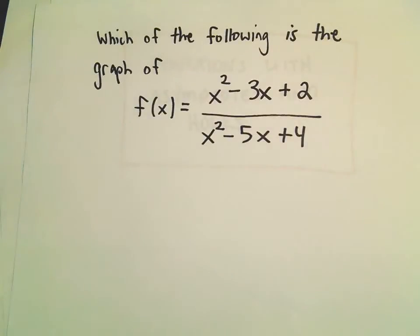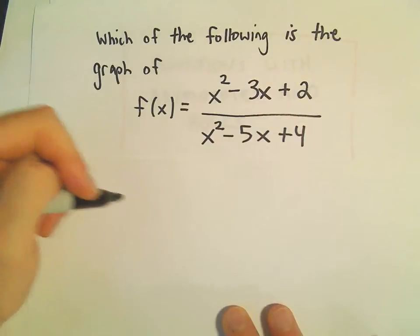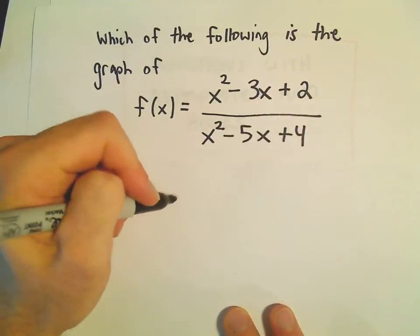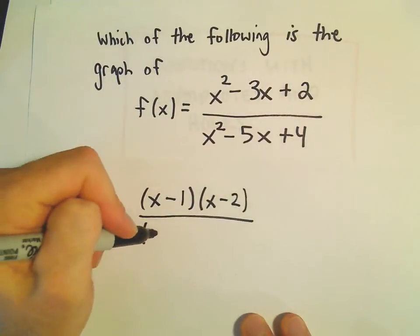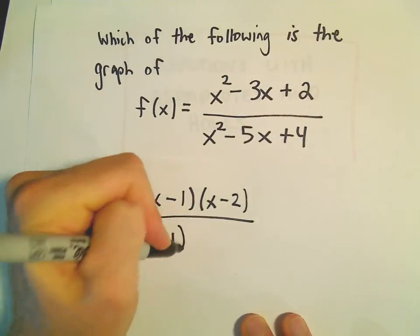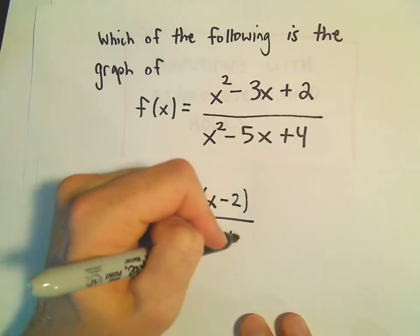And honestly on these you can do some calculus, but usually it's easier just to do a few algebraic things. So notice if we factor this function, we would have x minus 1 times x minus 2 on top over, let's see, x minus 1 times, looks like, x minus 4.